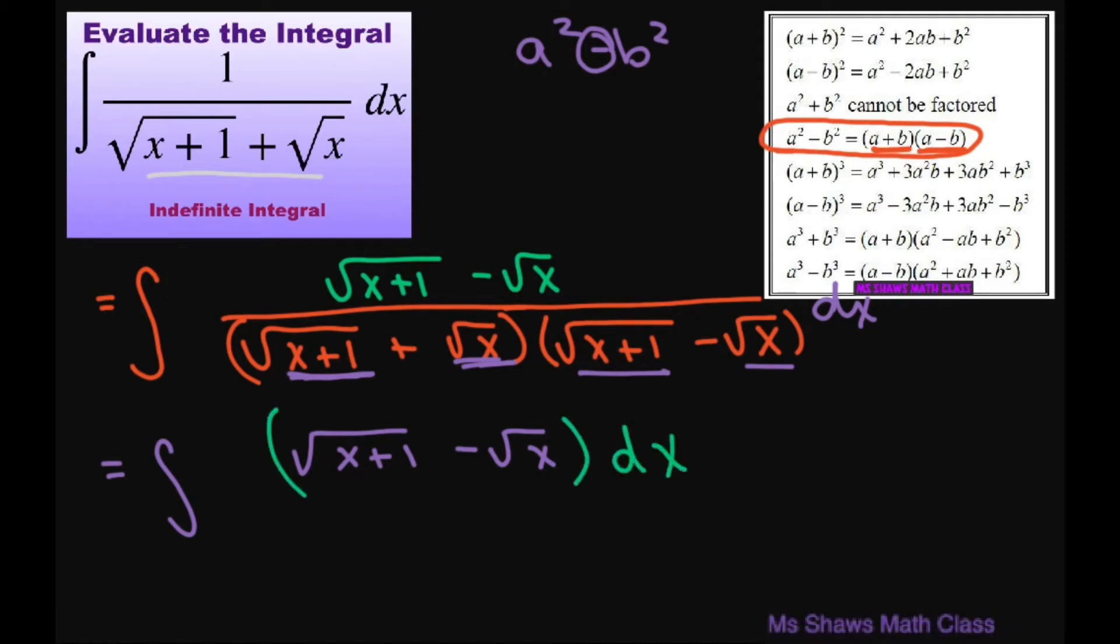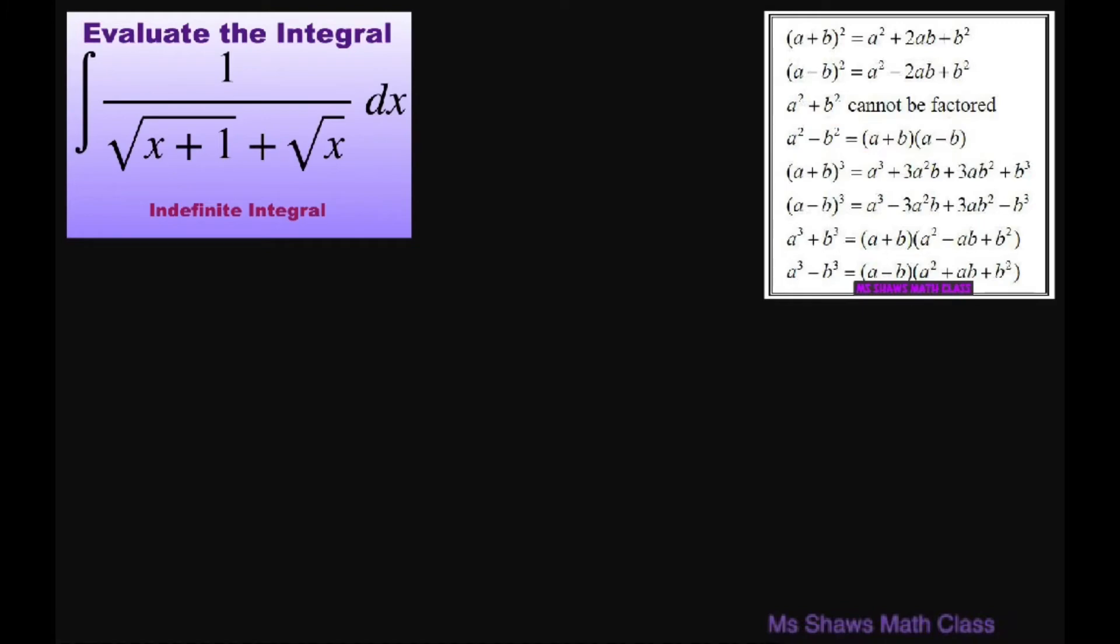So now that you have that, we're just going to integrate each of these pieces. And I'm going to write this as x plus 1 to the power of 1 half. So we're going to get the integral of x plus 1 to the power of 1 half dx, I'm splitting it up, minus the integral of x to the power of 1 half dx.